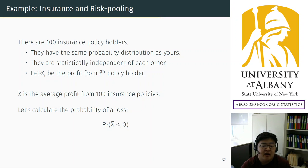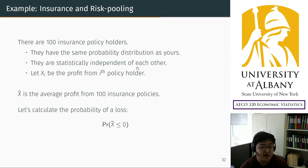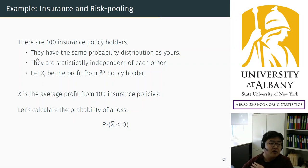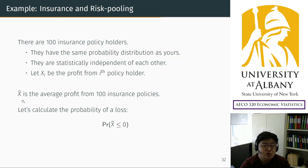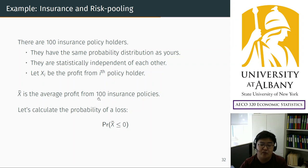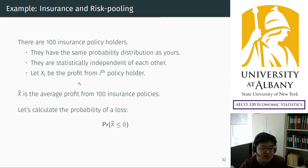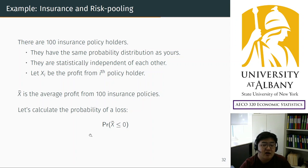Define X_i as the net profit from the i-th policyholder, where i runs from 1 to 100. For each policyholder, the net profit is either plus $500 or minus $2,500. Then x-bar is the average profit across all 100 insurance policies — the company sells 100 policies, and x-bar is the average profit. This is a new random variable we are interested in: not one single insurance policy, but the company as a whole.